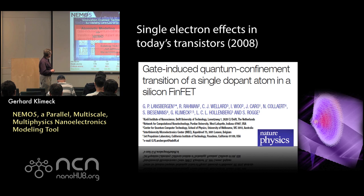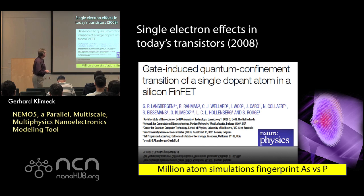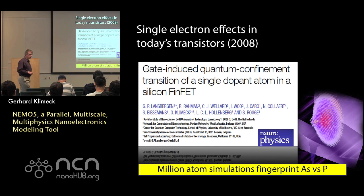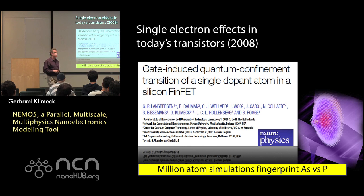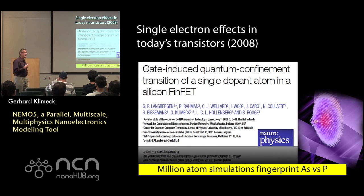I spend a lot of time in my career working on some of these issues. Physicists are allowed to cool devices down — they took a FinFET from 2008, cooled it down, and found single electron effects in single impurities. With million-atom simulations, we could fingerprint those as being arsenic versus phosphorus just by the impurity states, the excited states. That's an enticing result.